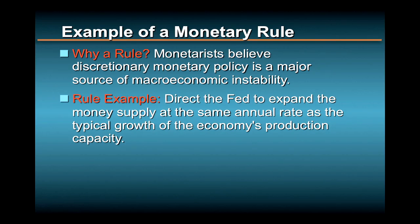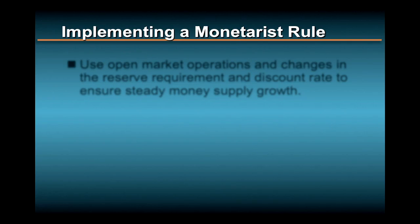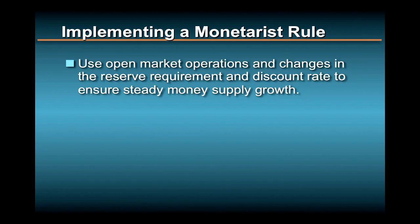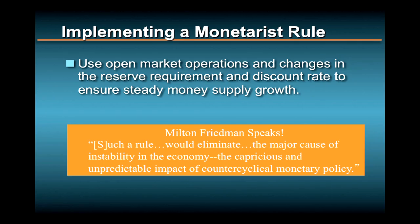Such a rule would direct the Federal Reserve to expand the money supply each year at the same annual rate as the typical growth of the economy's production capacity. The Fed's sole monetary rule would then be to use tools such as open market operations, changes in the reserve requirement, and discount rate changes to ensure that the nation's money supply grows steadily by, say, 3 to 5 percent a year. According to the father of monetarism, Milton Friedman, such a rule would eliminate the major cause of instability in the economy: the capricious and unpredictable impact of counter-cyclical monetary policy.